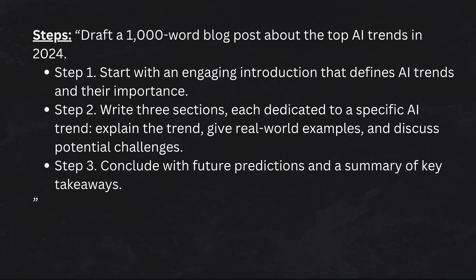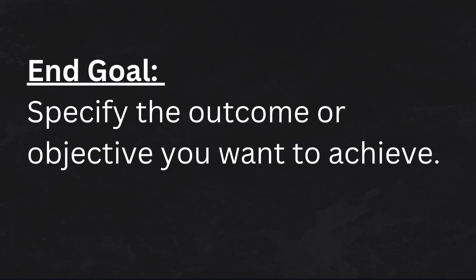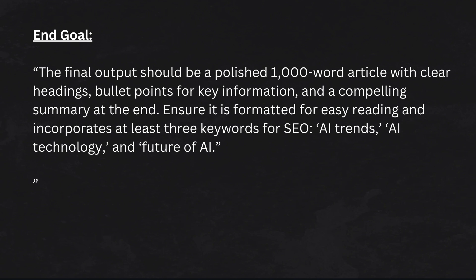This approach not only organizes the task but also helps you review and tweak each step individually. E stands for End Goal. Never assume the AI knows what 'done' looks like — clearly define your desired output. If you need bullet points, say so. If you want refined paragraphs or a chart, make it explicit. For example: 'the final output should be a polished thousand-word article with clear headings, bullet points for key information, and a compelling summary at the end, incorporating at least three keywords for SEO: AI trends, AI technology, and future of AI.'